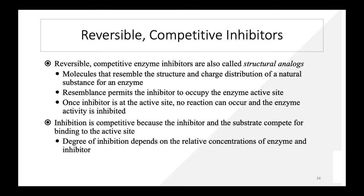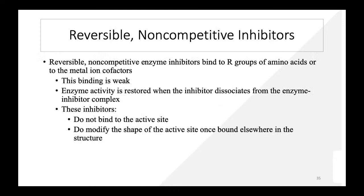Reversible competitive inhibitors are structural analogs of the substrate — they resemble the structure and charge distribution of the substrate, occupy the enzyme's active site, and once there, no reaction can occur. Inhibition is competitive because the inhibitor and substrate compete for binding at the active site. The degree of inhibition depends on relative concentrations of enzyme and inhibitor. Reversible non-competitive inhibitors bind to the R group or metal ion cofactor at a site other than the active site; this binding is weak and enzyme activity is restored when the inhibitor dissociates.